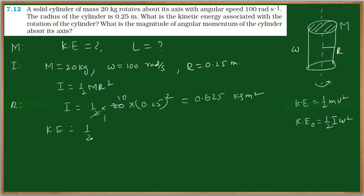That is equal to half I is 0.625 and omega 100 square. That is equal to, it will be 6250 divided by 2, that is equal to 3125 joules is the kinetic energy of that rotational system.